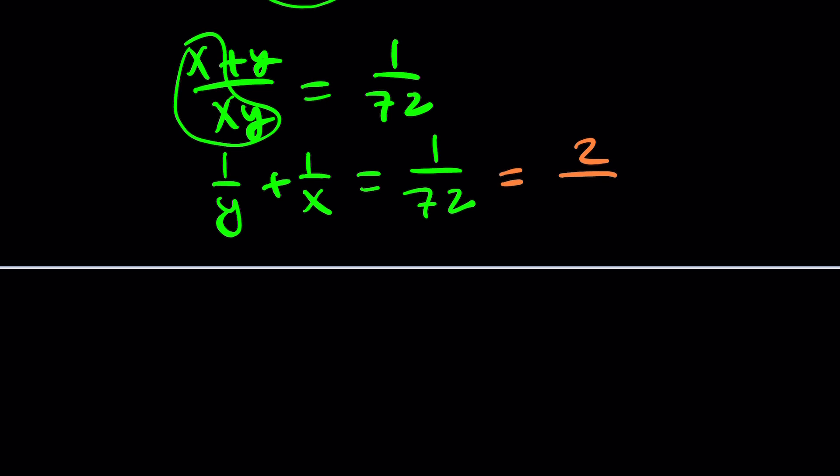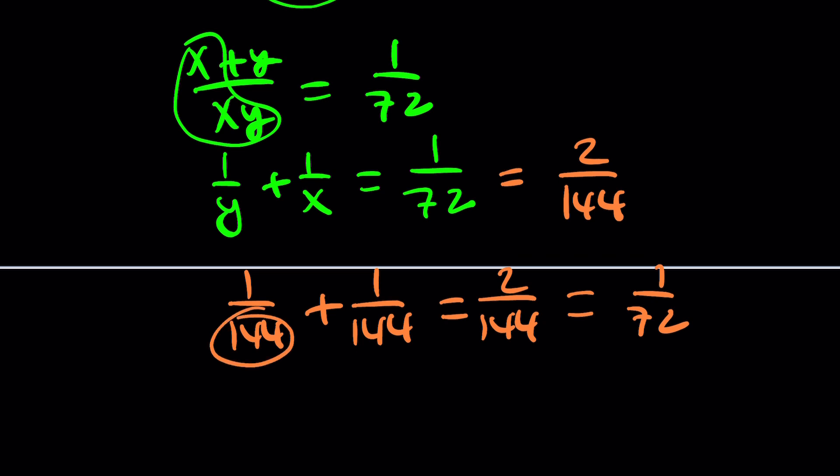Guess what? 1 over 72 can be written as 2 over 144. So if you add 1 over 144 and 1 over 144, you get 2 over 144, which is 1 over 72. So x and y can be these, and we already found them. That was our first solution.